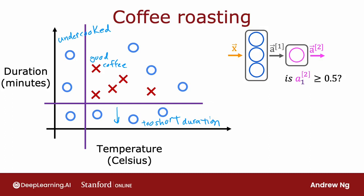And finally, if you were to cook it either for too long or for too high a temperature, then you end up with overcooked beans. They're a little bit burnt beans, and so there's not good coffee either. And it's only points within this little triangle here that corresponds to good coffee. This example is simplified a bit from actual coffee roasting. Even though this example is a simplified one for the purpose of illustration, there have actually been serious projects using machine learning to optimize coffee roasting as well.